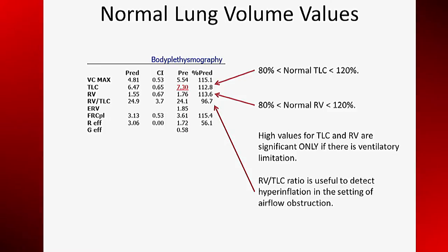In COPD, the pattern of hyperinflation is usually residual volume increasing out of proportion to total lung capacity. This produces an elevation of the RV to TLC ratio, which can be used to detect air trapping. The lung volume measurements are inherently less accurate than spirometry, so lung volumes must be interpreted within the context provided by spirometry.